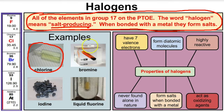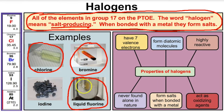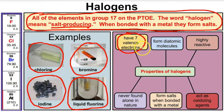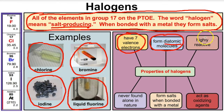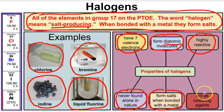Here's some chlorine gas — a pale yellowish-green gas — some bromine, some liquefied fluorine, and some iodine tablets. Properties of halogens: they all have seven valence electrons, they typically form diatomic molecules, meaning if not bonded to another atom they bond to themselves — you'll never see a lone fluorine or chlorine atom in nature. They're highly reactive, never found alone in nature, form salts when bonded with a metal, and act as oxidizing agents — they strip electrons off other elements, specifically metals.